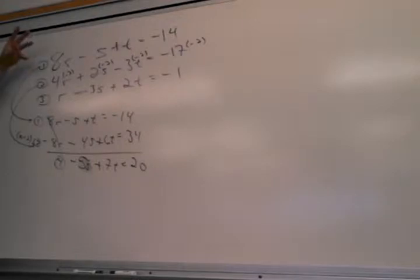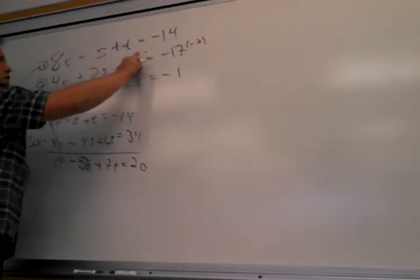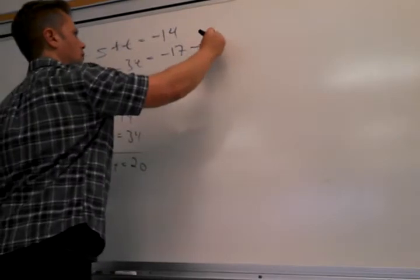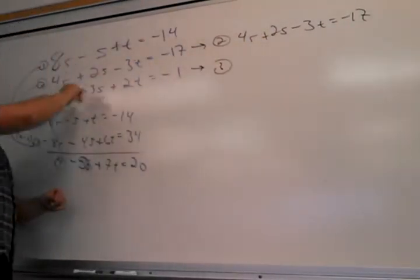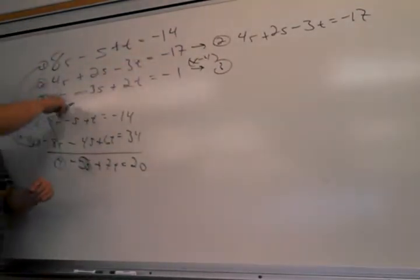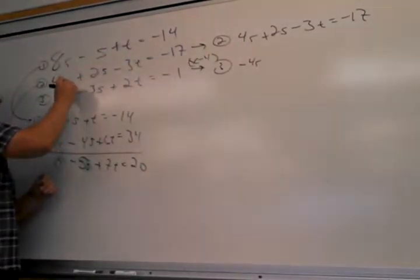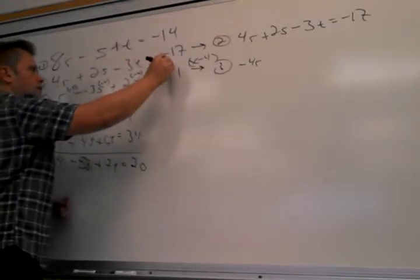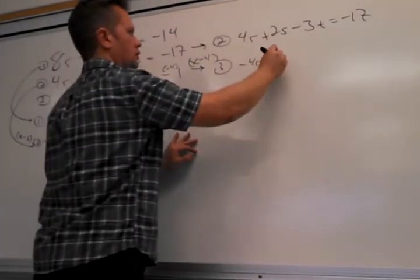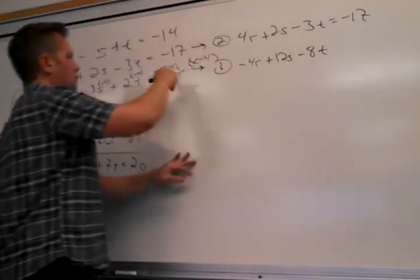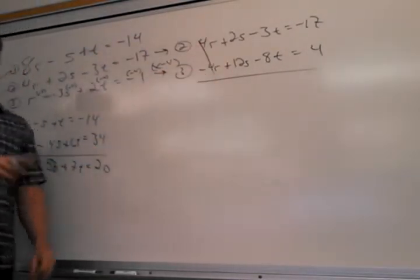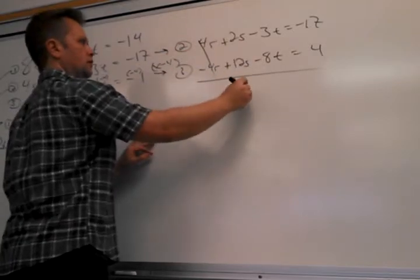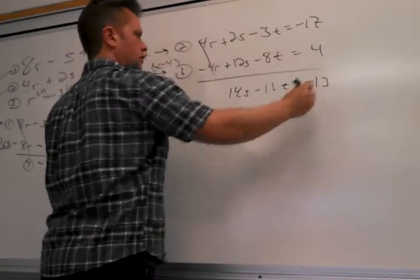And then you used equations 2 and 3 to kill r again. You multiply equation 3 by negative 4, giving negative 4r plus 12s minus 18t equals 4. The r's cancel, and adding to equation 2 gives us 14s minus 11t equals negative 13. That's our fifth equation.